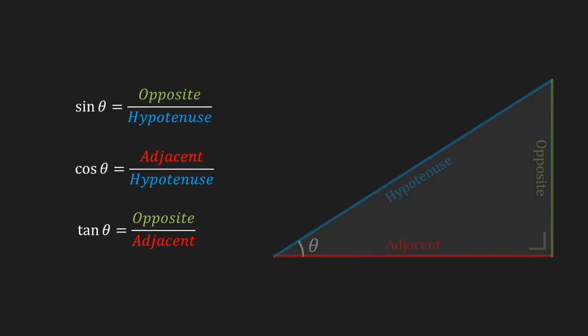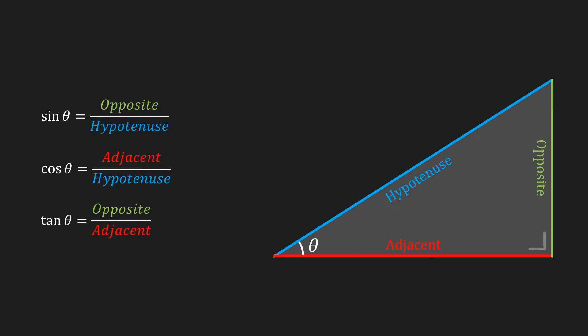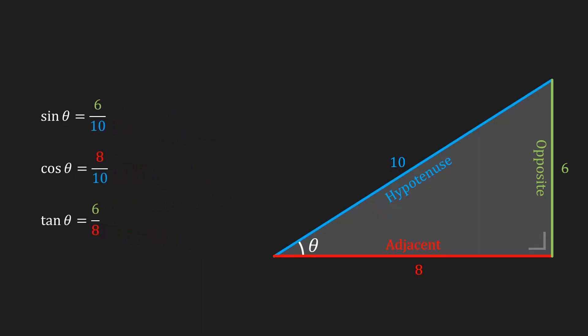If we now take our triangle and assign some imaginary lengths to its sides, then we can fill in these lengths in our formulas and calculate that the sine of theta is equal to 0.6, the cosine of theta is equal to 0.5, and the tangent of theta is equal to 0.75.